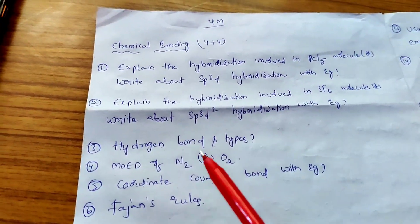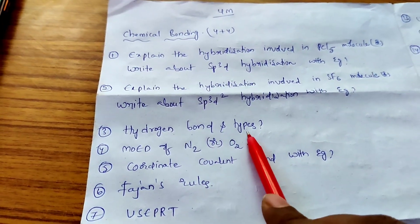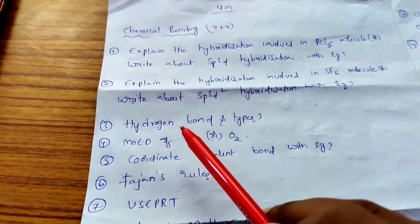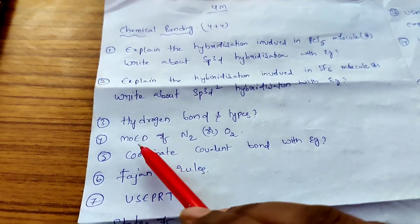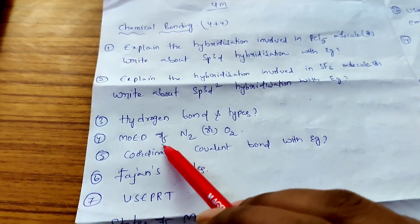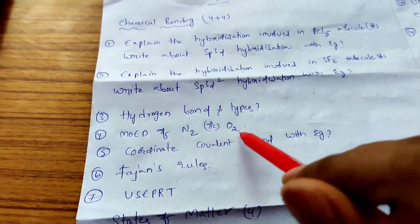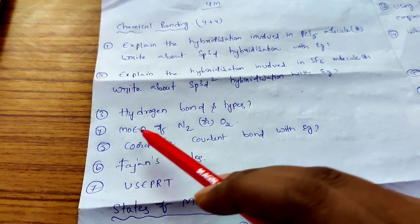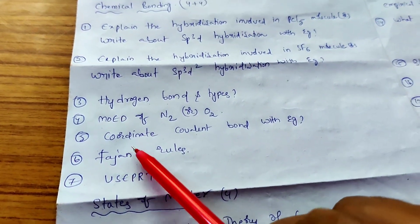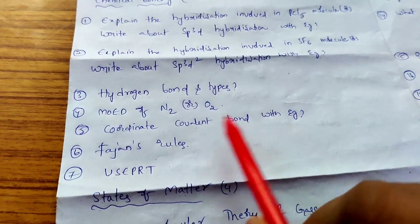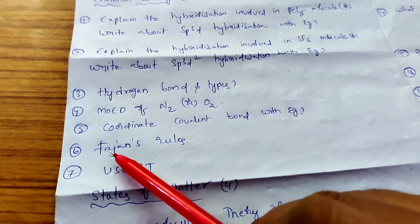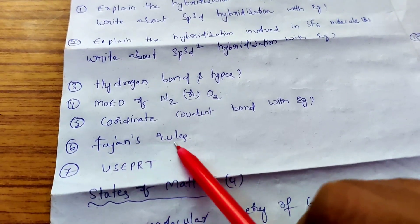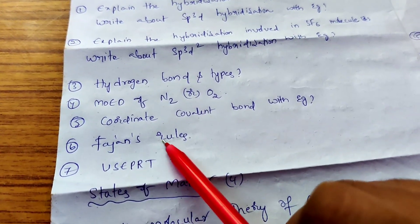Next important questions: What is a hydrogen bond? Explain types of hydrogen bonds — intermolecular and intramolecular — with examples. This is the most important 4-mark question from this chapter. Next: Draw the molecular orbital energy diagram (MOED) of N2 or O2 molecule — this is a very important question. Also: What is a coordinate covalent bond — explain with example. And: What are Fajan's rules? Explain the 4 rules with examples — this is a 4-mark question.